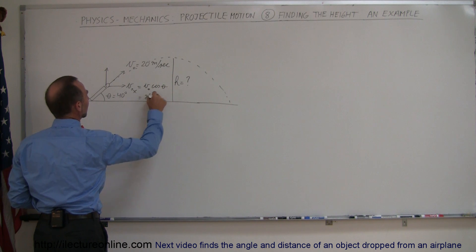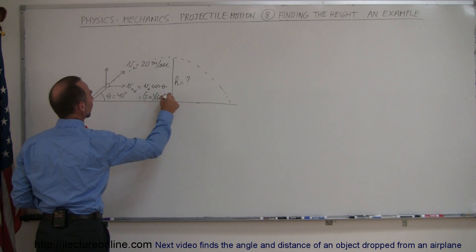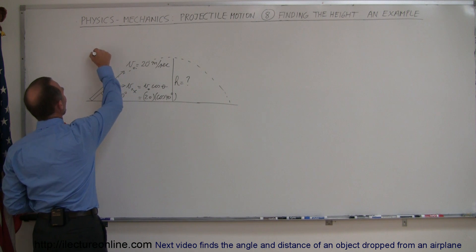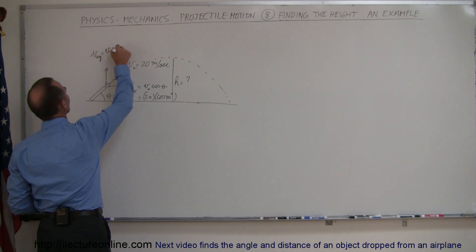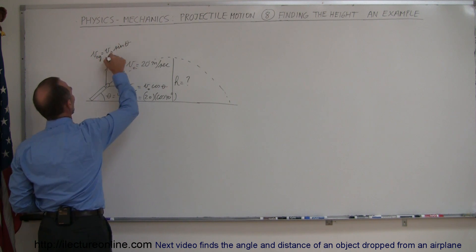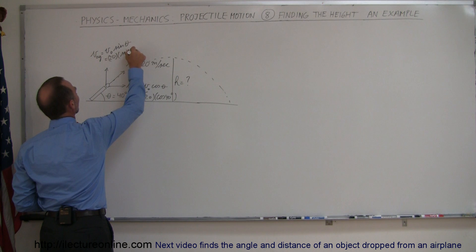In this case that's going to be 20 meters per second times the cosine of 40 degrees. And for the y component we have v initial in the y direction equals v initial times the sine of theta, or in this case 20 meters per second times the sine of 40 degrees.